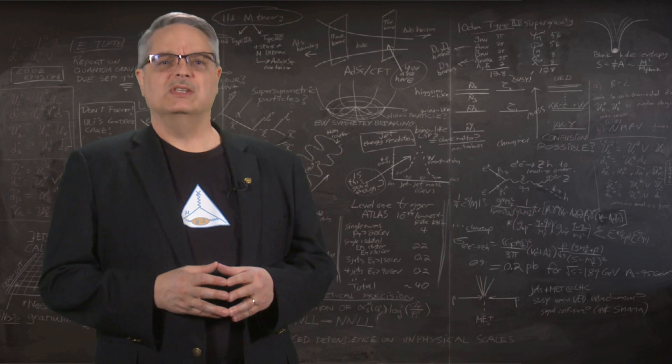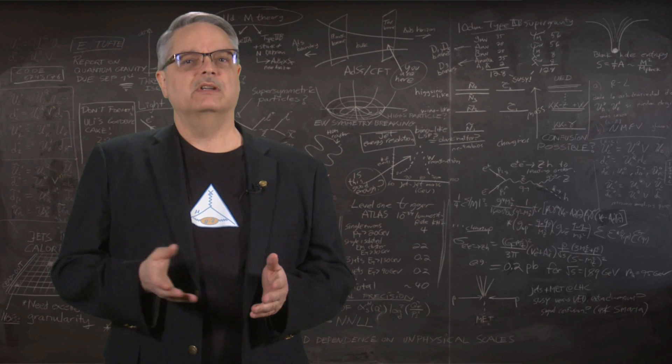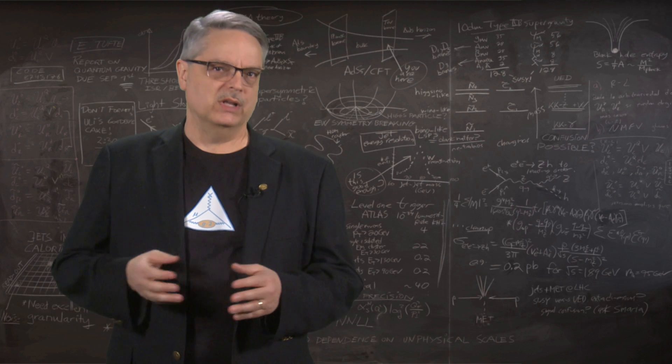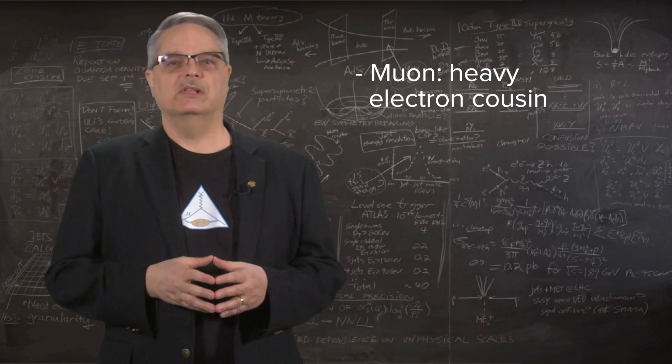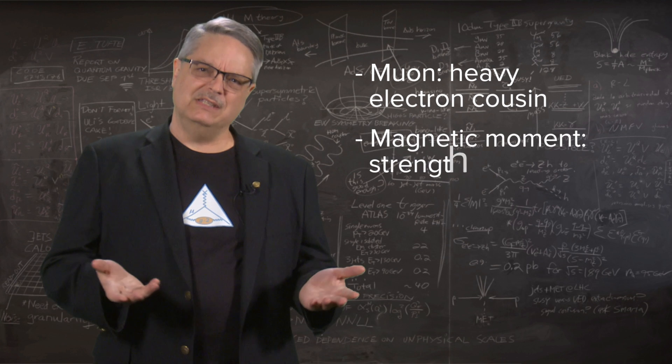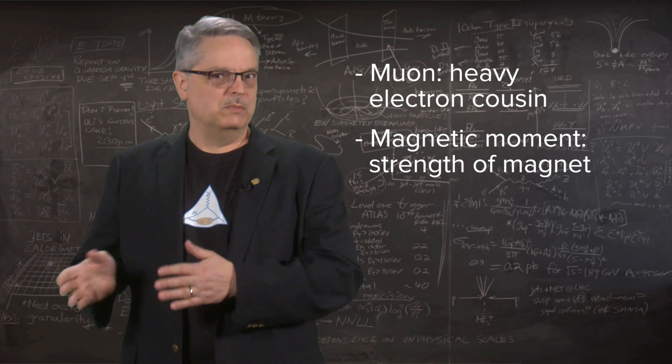One such discrepancy has arisen in the studies of the magnetic moment of subatomic particles called muons. Muons are kind of like heavy cousins of the electron, and the magnetic moment is basically how strong a magnet each individual muon is.